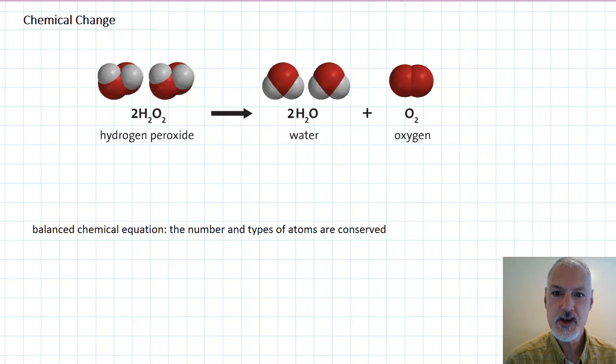We define chemical change as a change which results in substances with new properties. For instance, here we show a reaction whereby hydrogen peroxide is converted into new materials, water and oxygen gas.